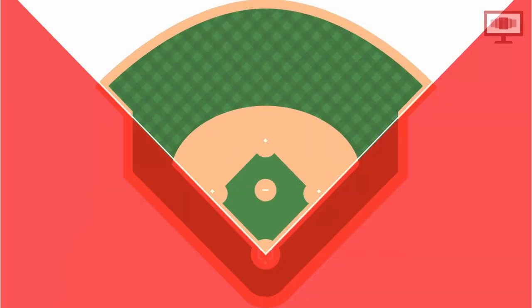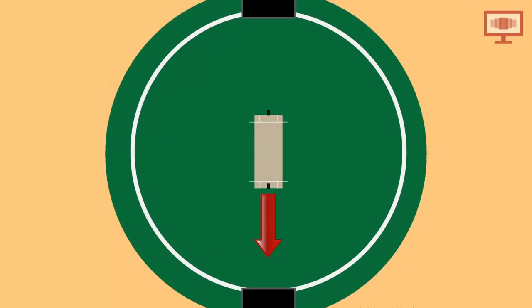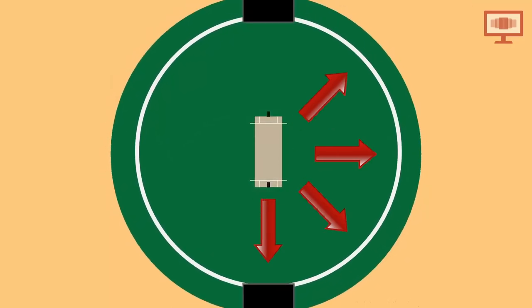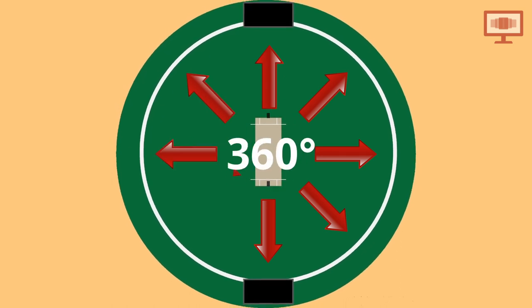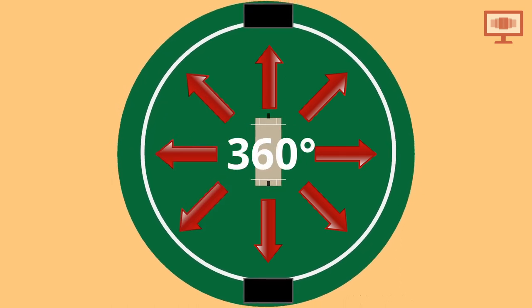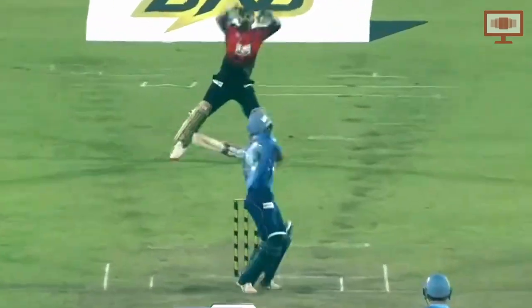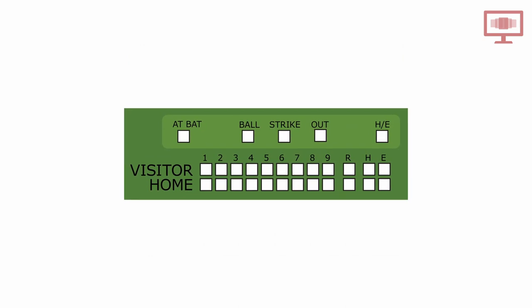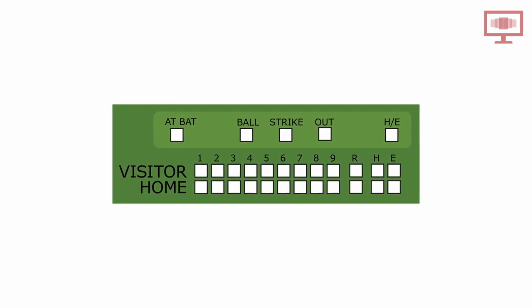In baseball, the diamond-shaped field in front of the batter is the area of play, and if the batter hits outside this area it's a foul. Cricket, on the other hand, is played on an oval-shaped field and the entire ground is available for play, which means a batter can hit the ball in any direction without committing a foul.